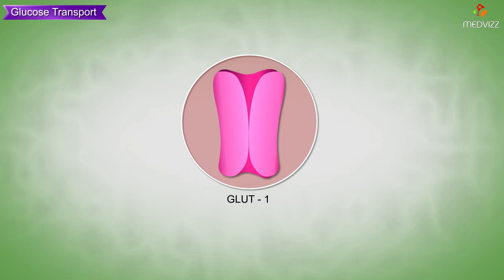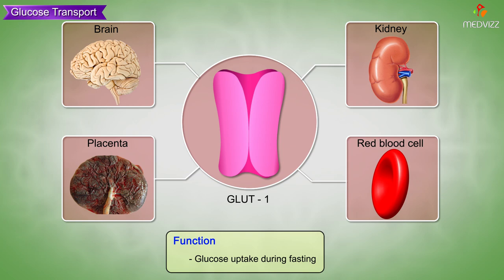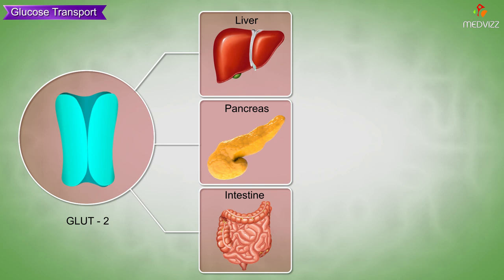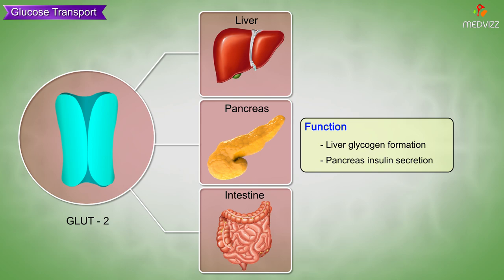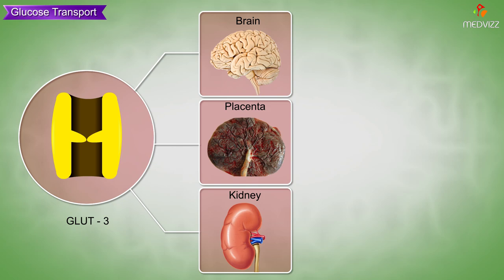The following are the glucose transporters, their location, and their function. GLUT1 is located in the brain, placenta, kidney, and RBCs; its function is glucose uptake during fasting. GLUT2 is located in the liver, pancreas, and intestine; its functions include liver glycogen formation and pancreatic insulin secretion.